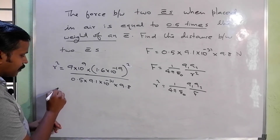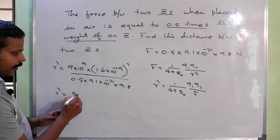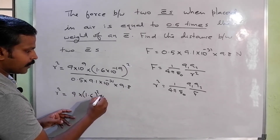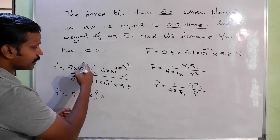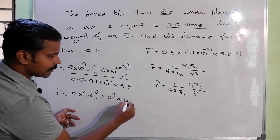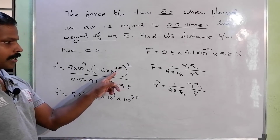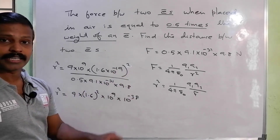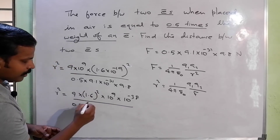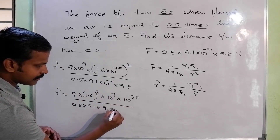So R squared equals 9 into 1.6 squared, with 10 raised to 9 times 10 raised to minus 19 squared giving 10 raised to minus 38, divided by 0.5 into 9.1 into 10 raised to minus 31 into 9.8. Collecting the powers of 10: 10 raised to minus 38 divided by 10 raised to minus 31 gives 10 raised to minus 7. Then 10 raised to 9 minus 7 gives 10 raised to 2.